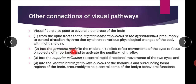The pre-tectal nuclei have a role in executing different reflexes of the eye. Third, fibers project into the superior colliculus to control rapid directional movement of the two eyes. The superior colliculus not only receives signals from the eye but also receives feedback signals from the visual cortex, and accordingly has a role in executing saccadic movement of the eye.